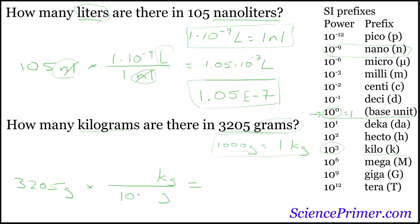Grams will cancel. The unit we end up with is kilograms. Now, if we multiply 3,205 by 1, then divide by 1,000, we end up with 3.205 is the final number.